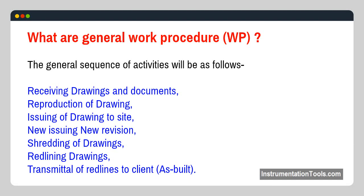What are general work procedures (WP)? The general sequence of activities is as follows: receiving drawings and documents, reproduction of drawing, issuing of drawing to site, issuing new revision, shredding of drawings, redlining drawings, transmittal of red lines to client, and as-built.